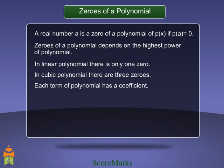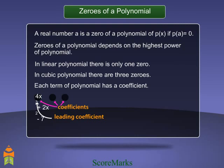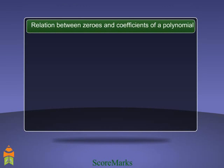Each term of a polynomial has a coefficient. Here the coefficient of x cubed is 4, the coefficient of x squared is 2, and the coefficient of x⁰ is 7. Let's understand the relation between zeros and coefficients of a polynomial.